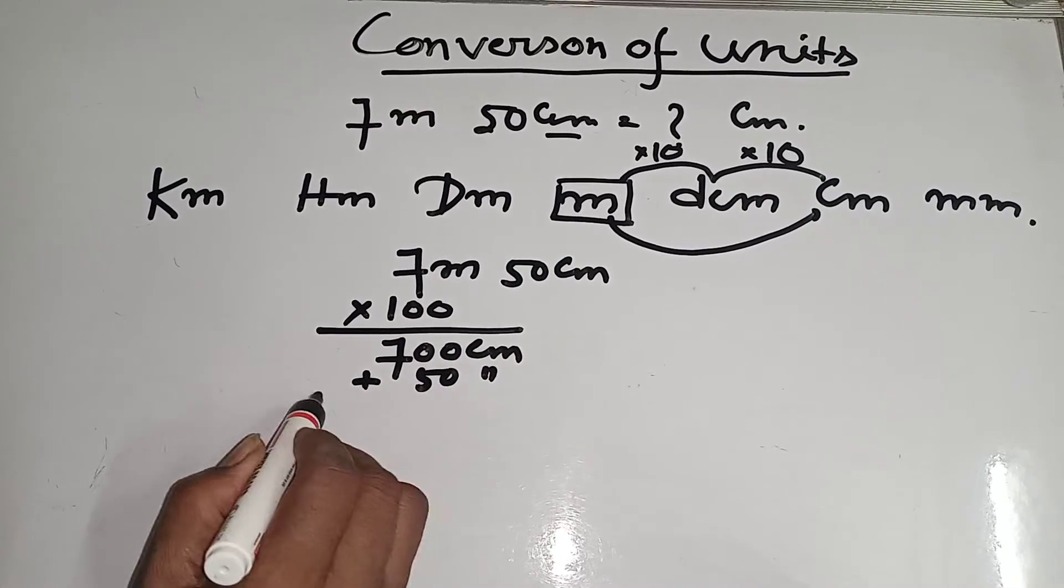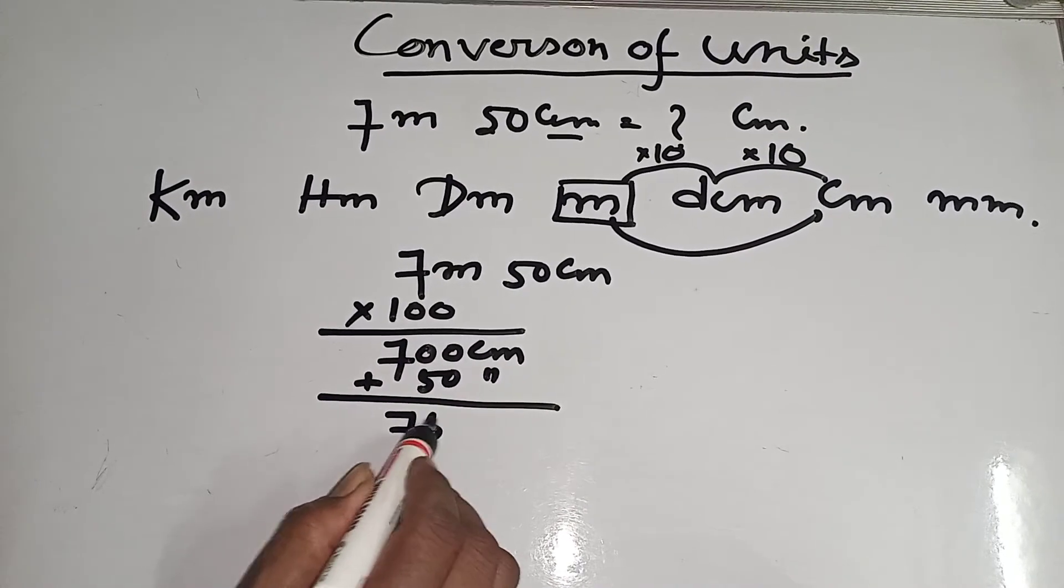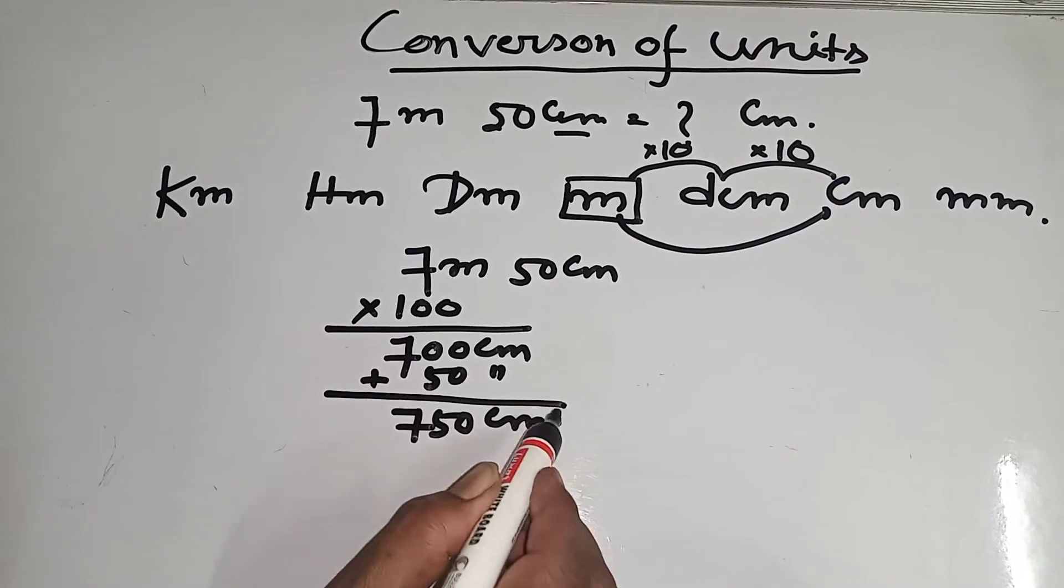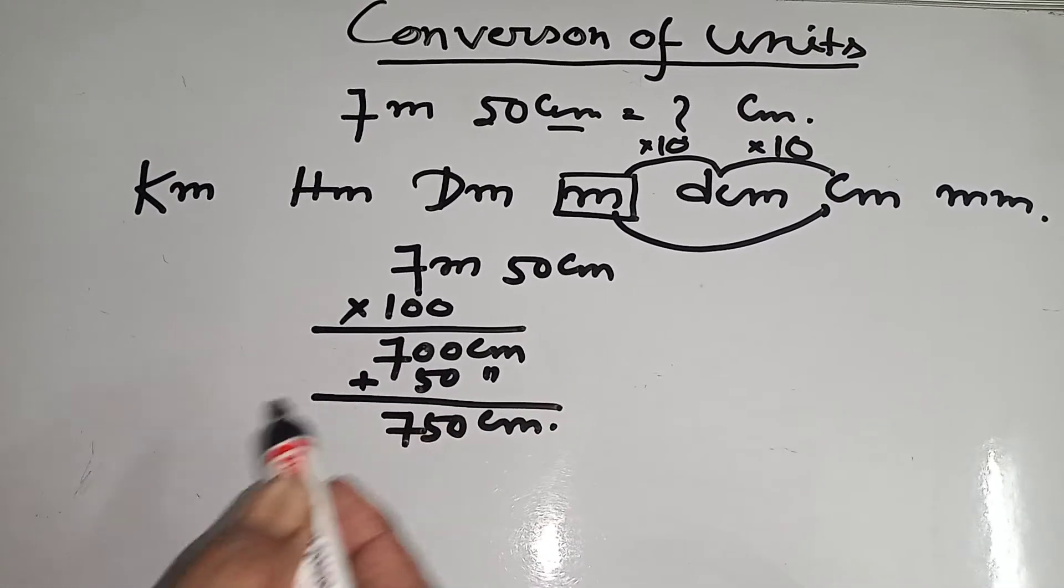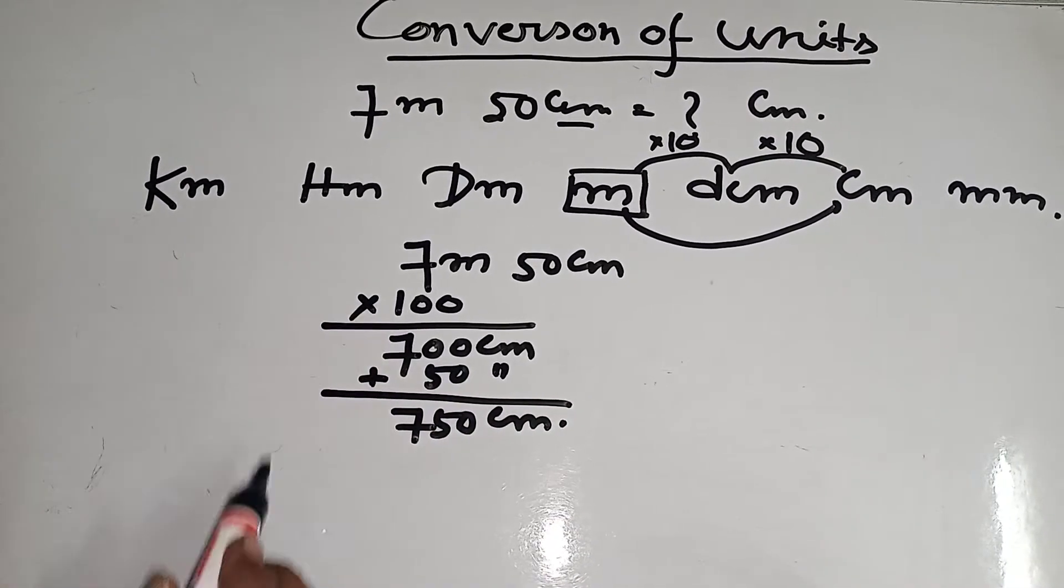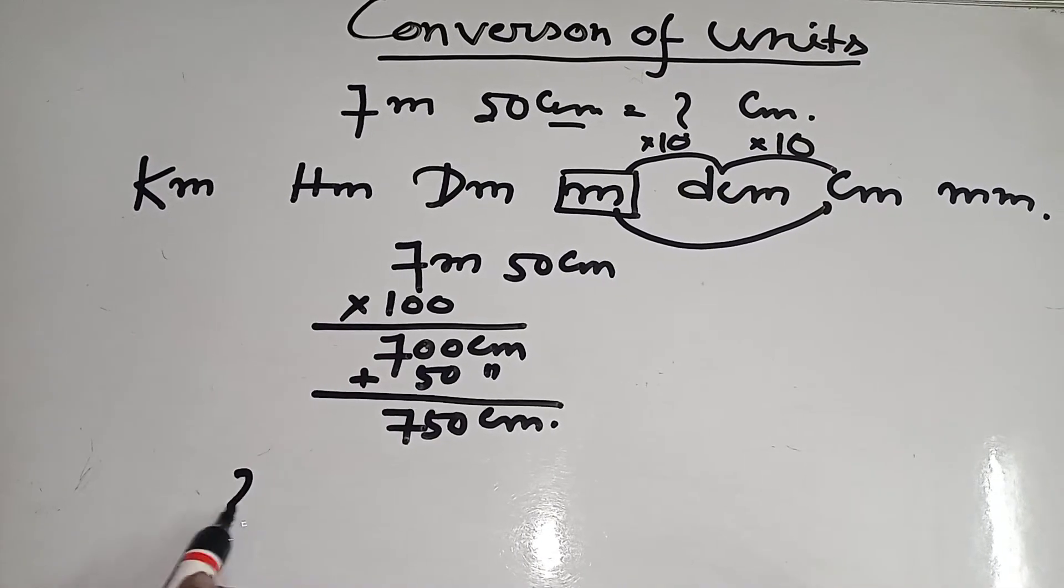Now 7 meters 50 centimeters, that means into 100, 700 centimeters plus 50 centimeters. That means 750 centimeters. Similarly suppose 2 hectometer.